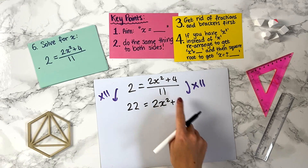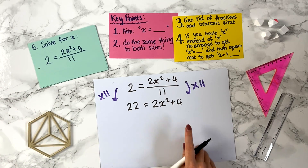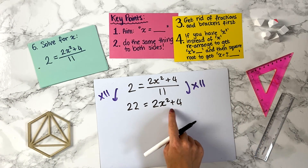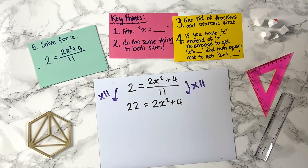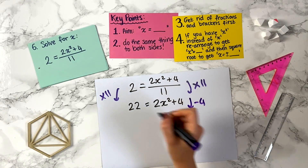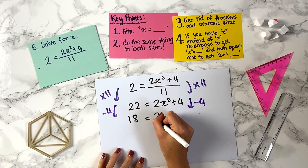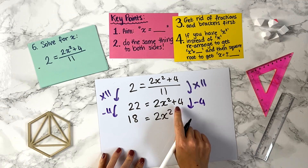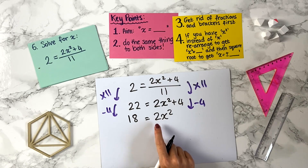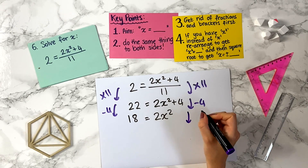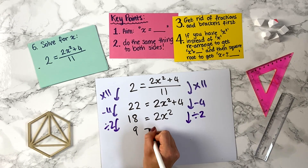The x squared is on the right hand side, so let's collect it there and put numbers on the left. We have 2x squared on the right, but we need to get rid of the plus 4. We minus 4 from both sides: 22 minus 4 gives 18 on the left, and 2x squared remains on the right. We then divide both sides by 2: 18 divided by 2 gives 9, so we have 9 equals x squared.